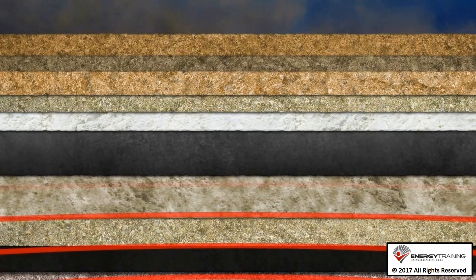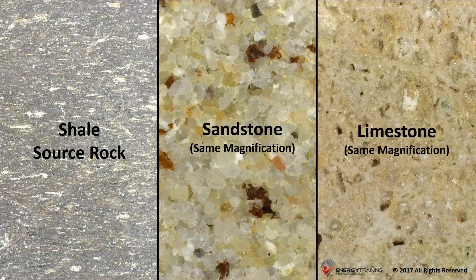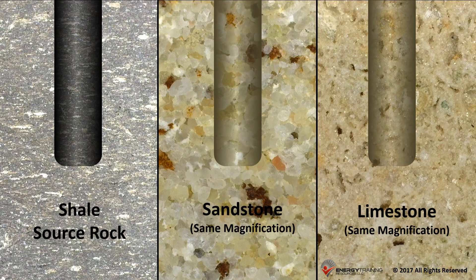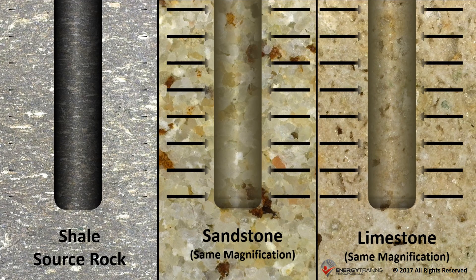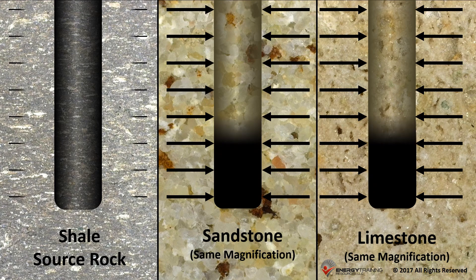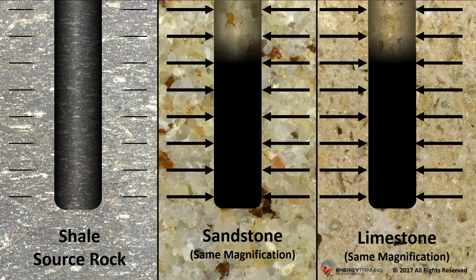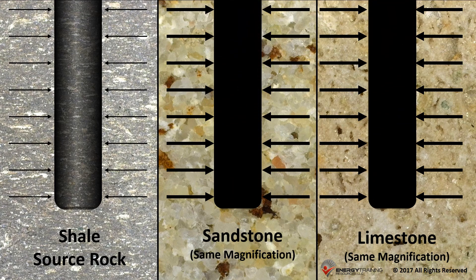Shale that has formed oil and gas is called source rock. The silt and clay grains in shale are tiny and stacked in a tight pattern, which makes the rock nearly impermeable. As a result, if a well were drilled into source rock, very little oil and gas would make its way through the rock to the wellbore.